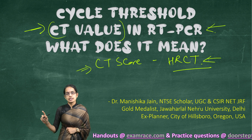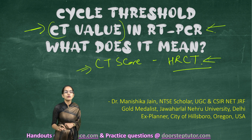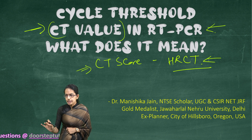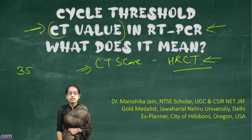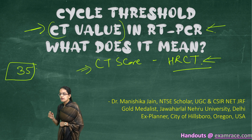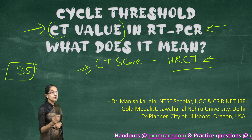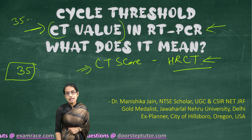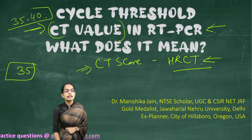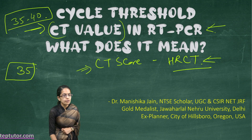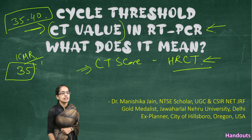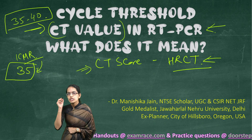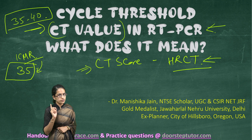CT score and HR-CT we would cover in a separate class. In this class, we would focus on the CT value. Individuals are considered COVID-19 negative only if the CT value is 35 in the RT-PCR test. If the value is below 35, that means the person is COVID positive. These values have been indicated separately from nation to nation. WHO has recommended a range of 35 to 40. India through ICMR recommends the CT value threshold as 35, so any value below 35 indicates COVID positive in India.